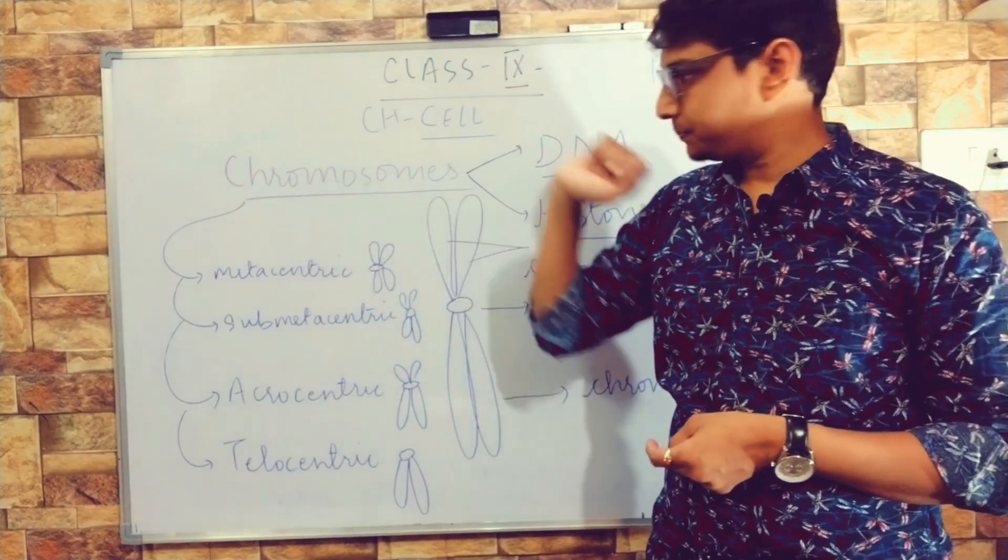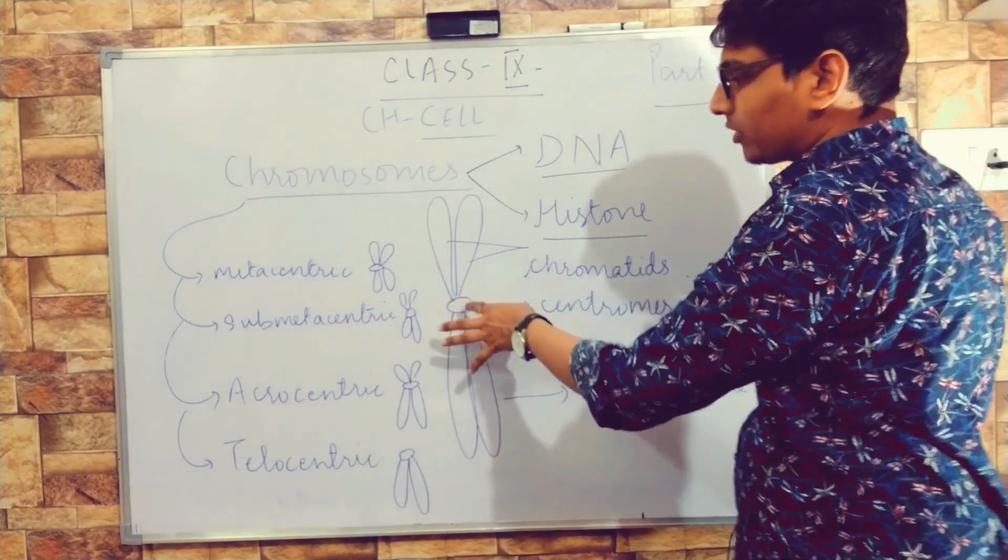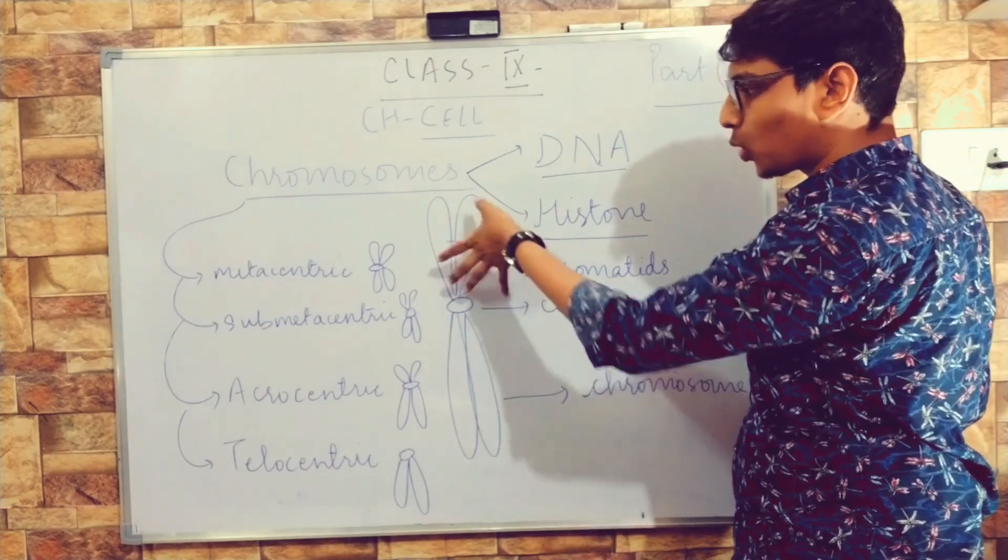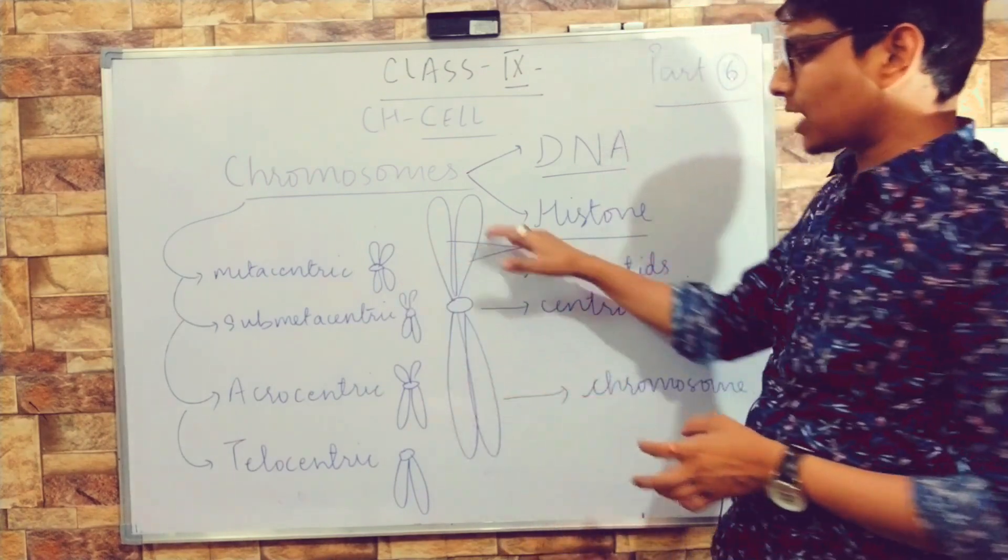The structure is like this: it has a central part we call the centromere. This is a constriction between two strands, two arms of the chromosome. There are a pair of arms present.